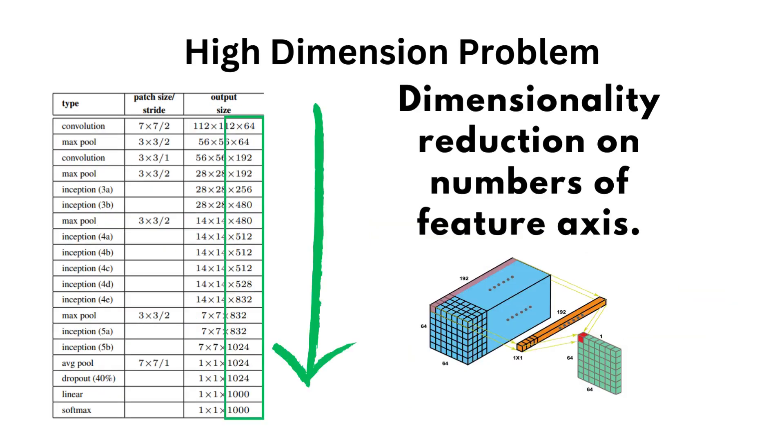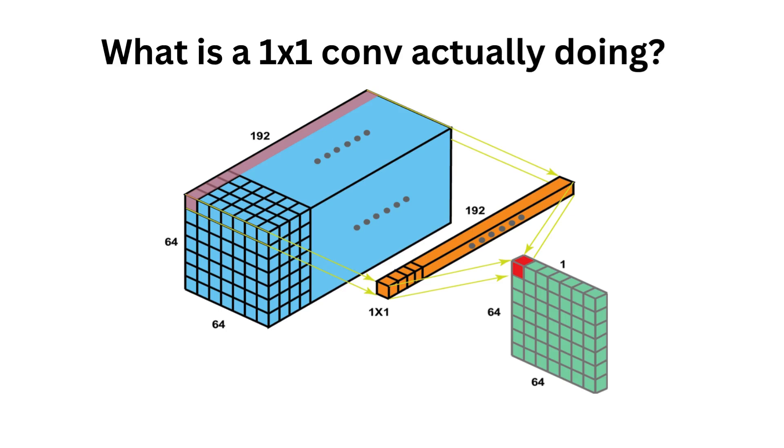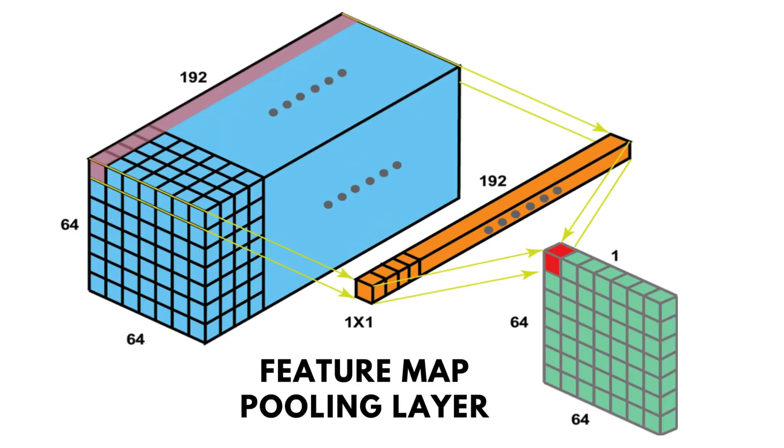This is where the 1x1 convolution comes into play. Its goal is to reduce the number of feature filters to keep its dimension in check. It does that dimensional reduction without dropping useful information, but instead summarizes them. So this 1x1 convolution operation has many names, and it isn't always obvious that we're talking about a 1x1 convolution. In some papers, it's called a feature map pooling layer. This makes sense because it behaves as a pooling layer on the feature map domain.